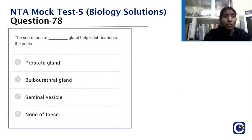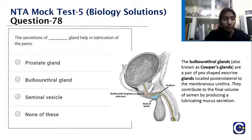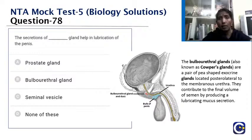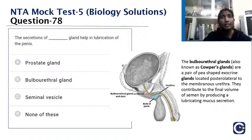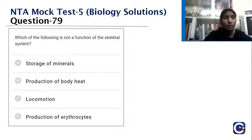The secretion of which gland helps in lubrication of the penile urethra — prostate gland, bulbourethral gland, seminal vesicle, or none? The prostate and seminal vesicles contribute most of the seminal fluid content, but lubrication is performed by the bulbourethral glands (Cowper's glands), discovered by anatomist William Cowper. Located near the urethra, they contribute to the final volume of semen, lubricate the urethra, and neutralize urethral acidity. The answer is the bulbourethral gland.